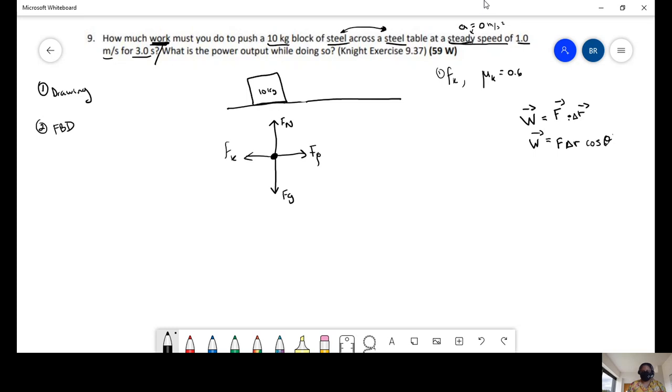So let's find first the force of push, because this is the force that you're going to be applying towards the system. We're going to do the summation of the forces in x equals 0, because we have steady speed. And the summation of forces in y equals 0, because it's not moving up and down.